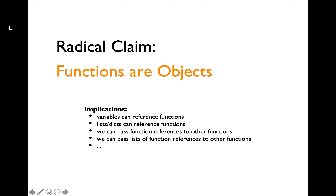Let's take this radical claim into consideration now. If functions are also objects in Python, then variables can now contain references to functions. Similarly, lists and dictionaries can also contain references to functions as items. We should be able to pass function references as arguments to other functions, just like we are able to pass object references as arguments.